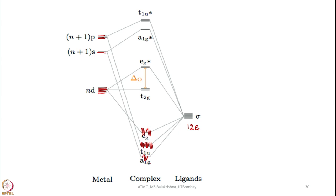If any electrons are left in t2g — that is dxy, dyz, and dzx — they remain non-bonding and are placed here. The gap we have here is called delta_o. From here onwards, the orbitals all have antibonding properties — they are antibonding molecular orbitals: eg*, a1g*, and t1u*. This is how one can write a typical MO diagram for a metal complex with octahedral geometry.